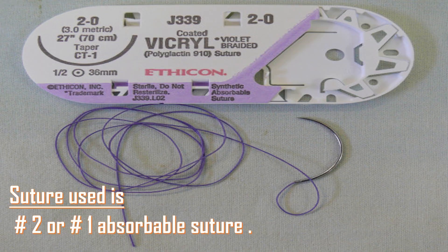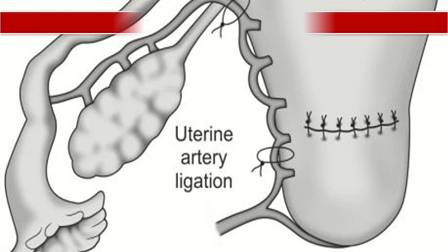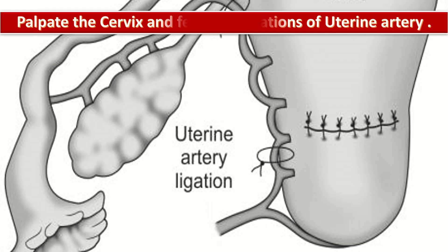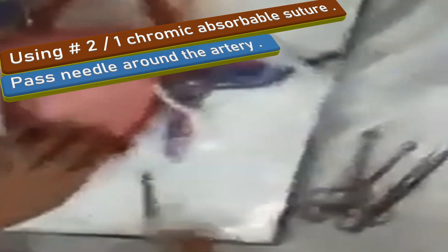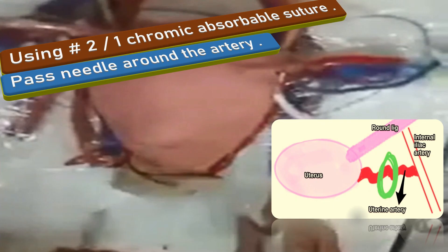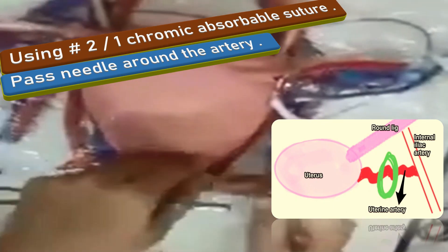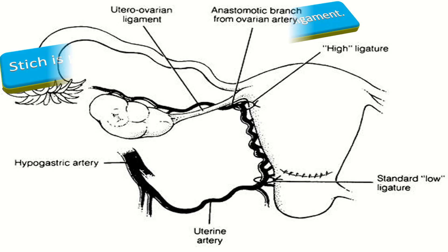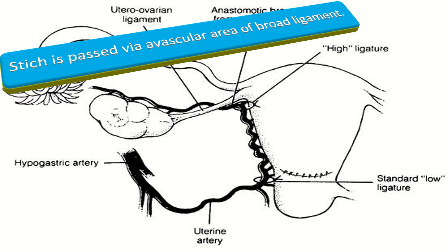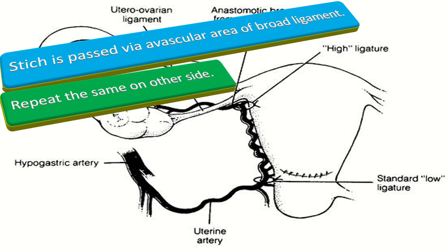Use number 2 or number 1 absorbable suture. Palpate the cervix and feel for the pulsation of the uterine artery near the junction of the uterus and cervix. Pass the needle around the artery two to three centimeters medial to the lateral edge of the uterus via the myometrium, preferably from anterior to posterior. The stitch is then passed via the avascular area of the broad ligament and tied anteriorly. Repeat the same procedure on the other side.